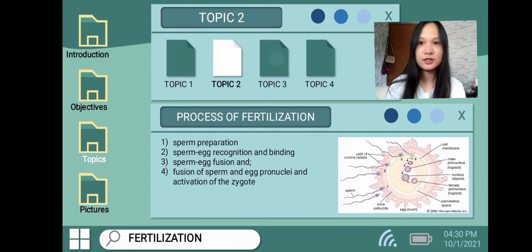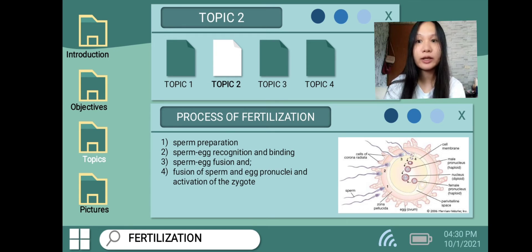The process of fertilization involves four steps: sperm preparation, sperm-egg recognition and binding, sperm-egg fusion, and fusion of sperm and egg pronuclei and activation of the zygote. First, ejaculated sperm are not ready to fertilize an egg when they are in the vagina. In response to the dilution of semen in the vagina, they undergo several changes collectively known as capacitation — the period of time that sperm must reside in the female reproductive tract before they acquire the ability to fertilize an oocyte.